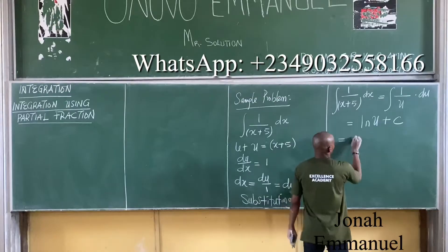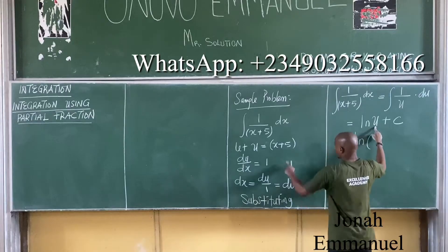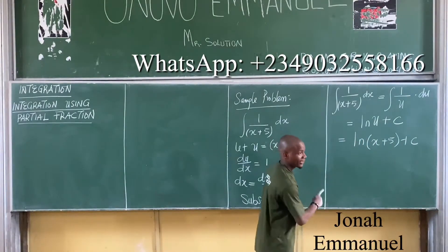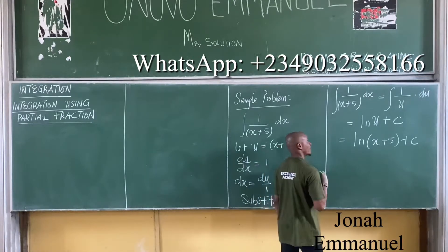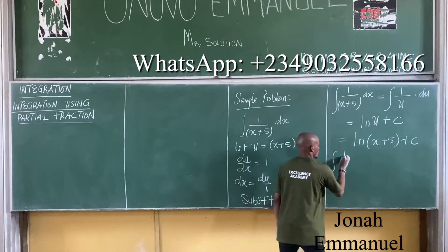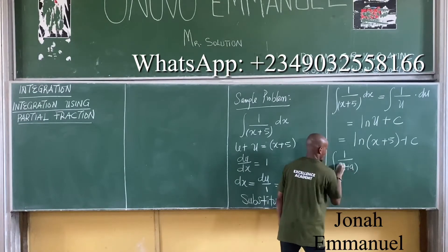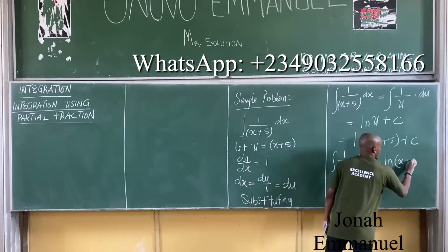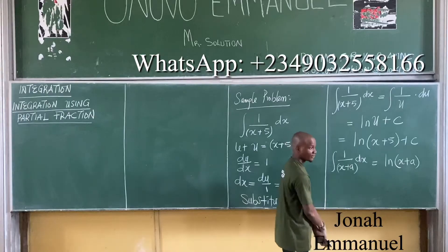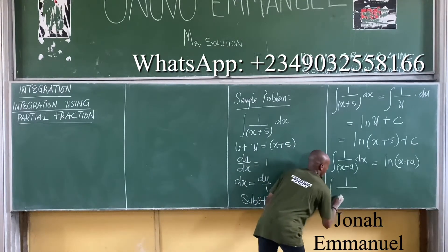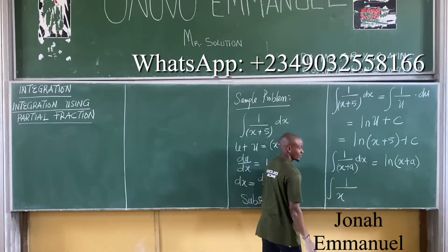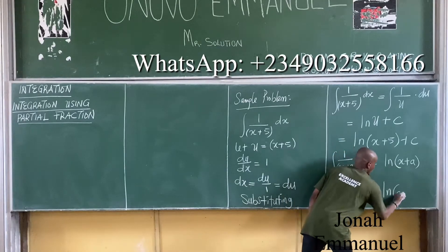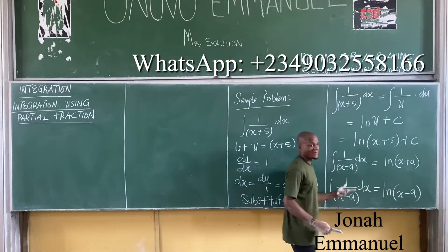So the general rule: if I have the integral of 1 over (x + a) dx, the answer is ln|x + a|. Similarly, if I have the integral of 1 over (x − a) dx, the answer is ln|x − a| or ln|a − x|. Please note this.